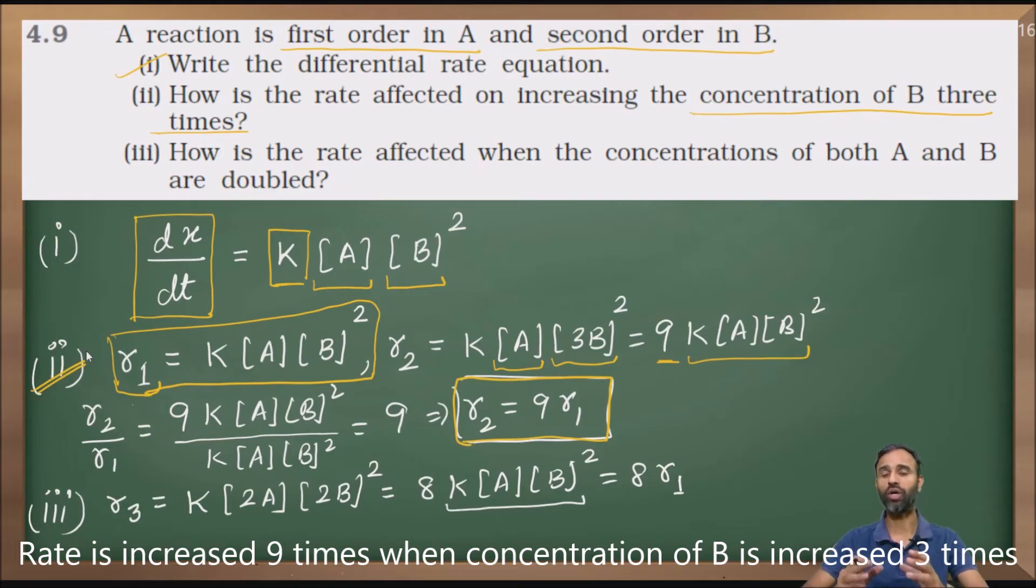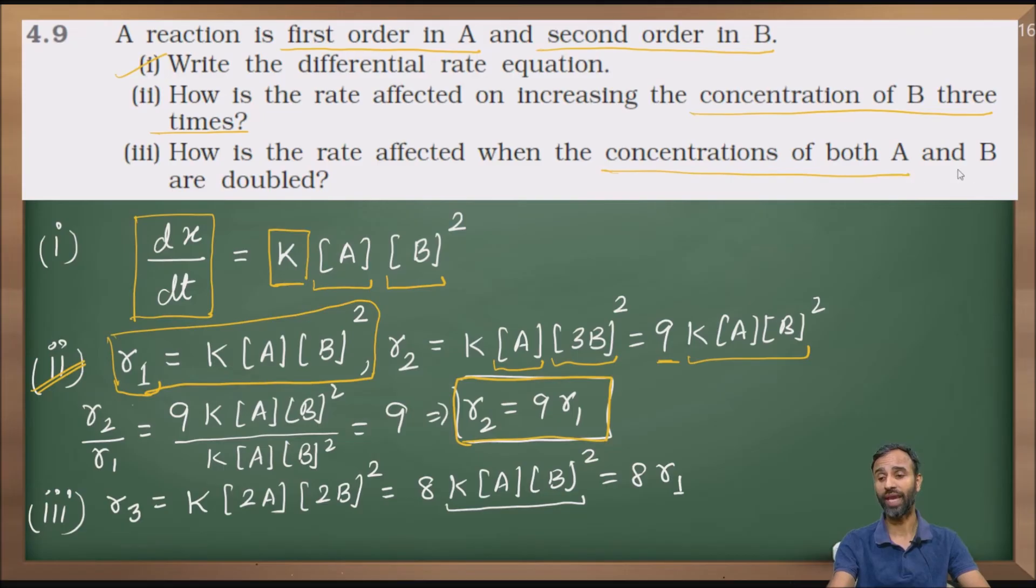Now, third part. How is the rate affected when concentration of both A and B are doubled? A and B both are doubled. When A is doubled, it becomes 2A. Instead of A, it is 2A raised to power 1.